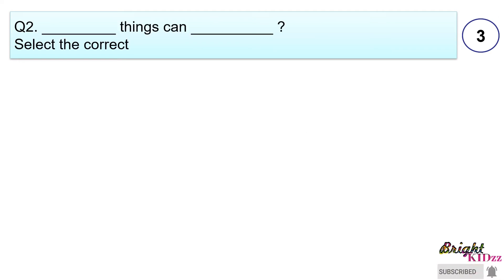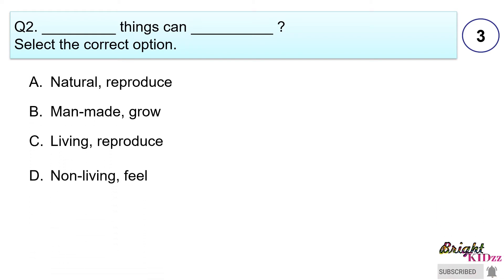Dash things can dash. Select the correct option. A. Natural things can reproduce. B. Man-made things can grow. C. Living things can reproduce. D. Non-living things can feel.